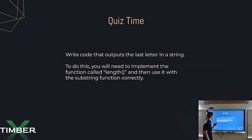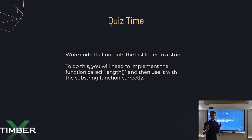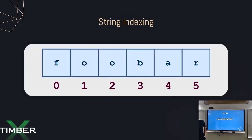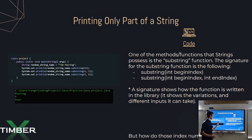Now write code that outputs the last letter in the string. To do this, you'll need to use both the dot length and substring functions correctly. Go ahead and pause. The answer is: you do random_string_name.substring, and instead of four, you put random_string_name.length() minus one. The index of the last letter is the length minus one — that's why we need that minus one at the end.